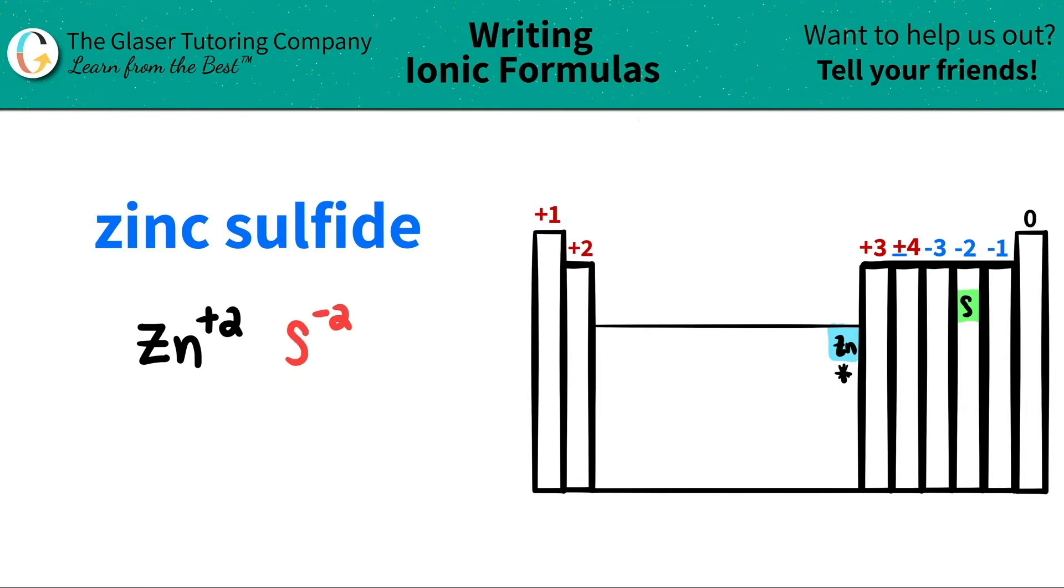Now I have the two charges. So what we're going to do is we're going to crisscross these two just to tell me how many of each compound or each element I need. So this plus two crisscrosses down.